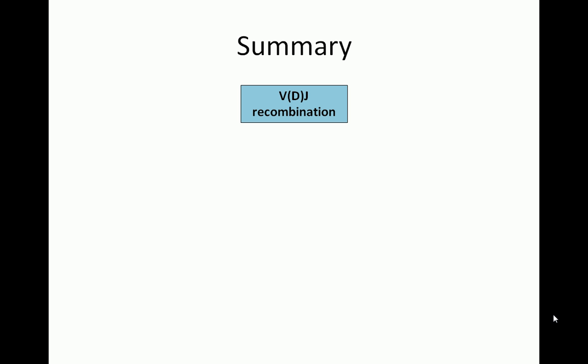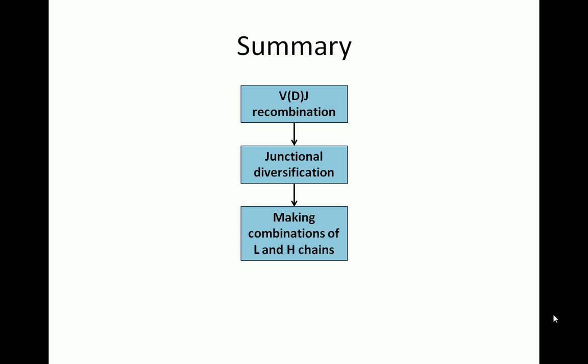In summary, the diversity of antibodies is achieved first by V(D)J gene segment combination, which makes variety in the variable regions of light and heavy chains. This variety is increased by junctional diversification, which adds or deletes nucleotides from segment junctions. Even greater diversity is achieved by the possible combinations of different light and heavy chain types. Finally, somatic hypermutation further increases the variety of antibodies that can bind to different types of pathogens, and class switching extends the set of functions that our antibodies can fulfill.